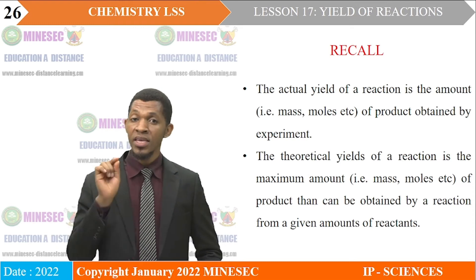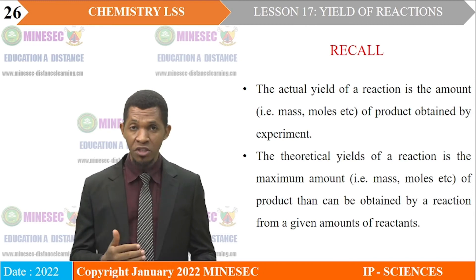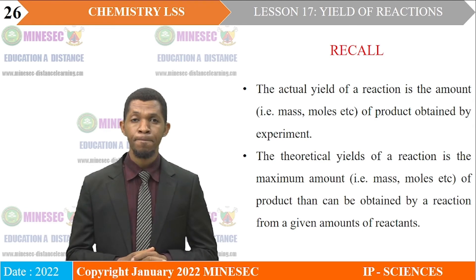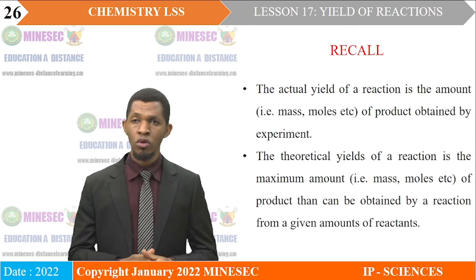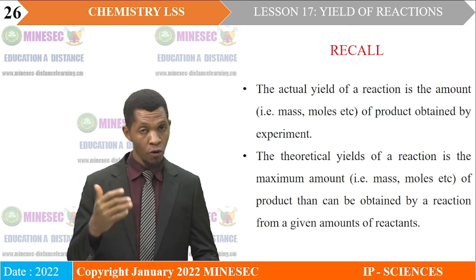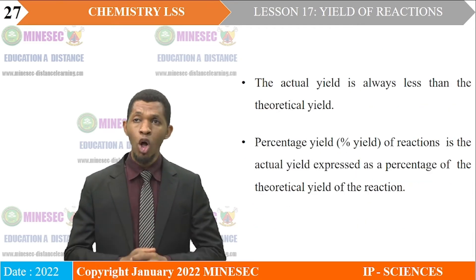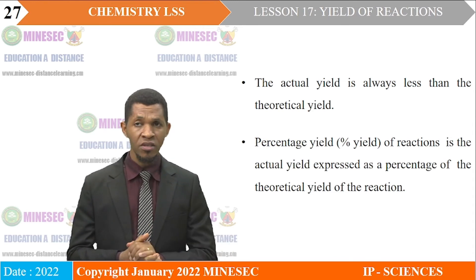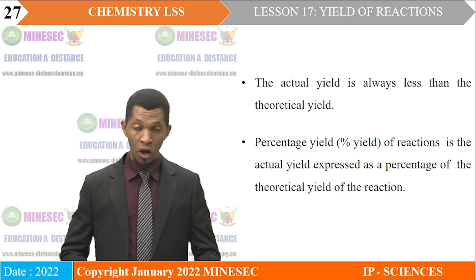Recall: the actual yield is the amount of product obtained by experiment. The theoretical yield is the maximum amount of product obtained from a given amount of reactant. The actual yield is always less than the theoretical yield. The percentage yield is the actual yield expressed as a percentage of the theoretical yield.